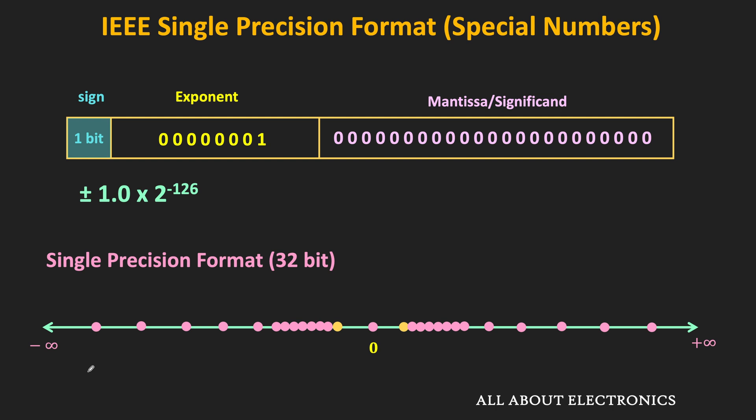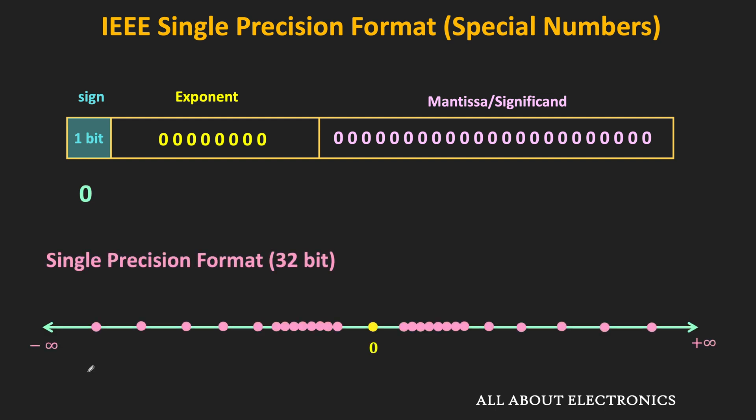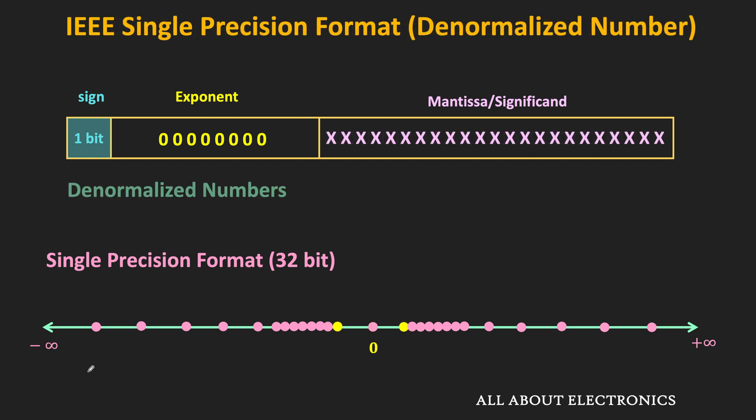In any normalized number, the significant digit before the binary point is always equal to 1. Therefore, it is not possible to represent 0 in normalized form. For representing special numbers like 0 and infinity, the exponent value of all zeros as well as all ones is used. Whenever the exponent field is 0 and the mantissa field is also 0, that represents the number 0. Similarly, when the exponent field is 0 and the mantissa field is non-zero, that represents the denormalized numbers.